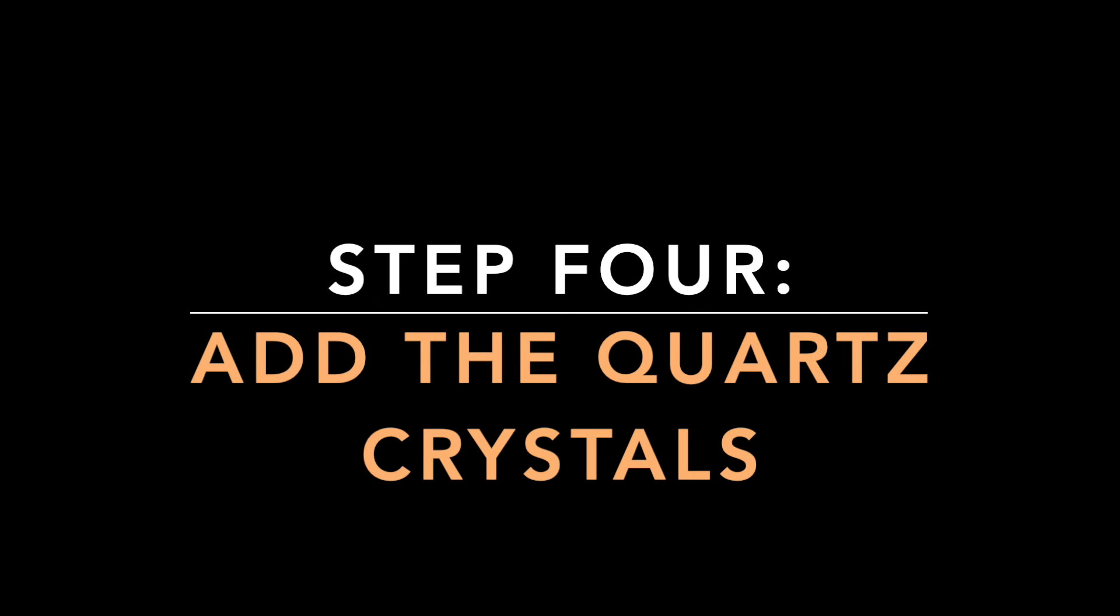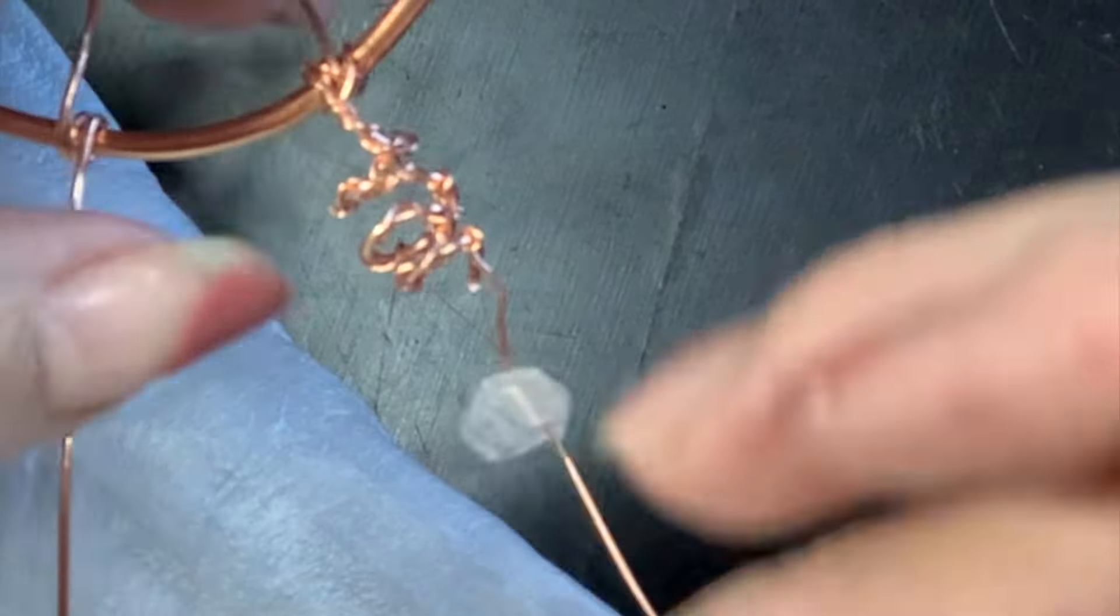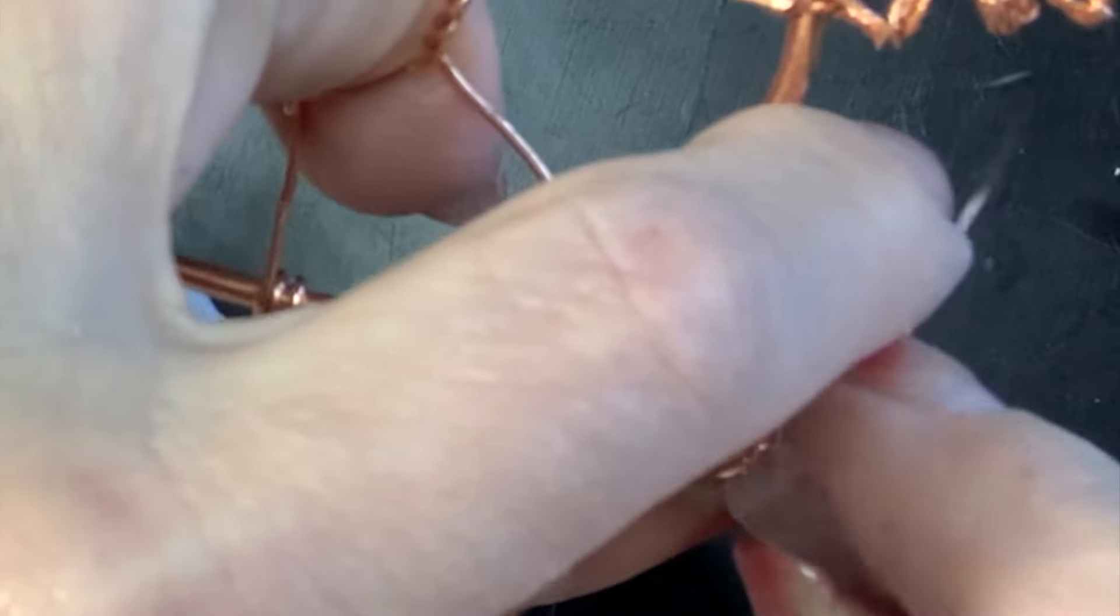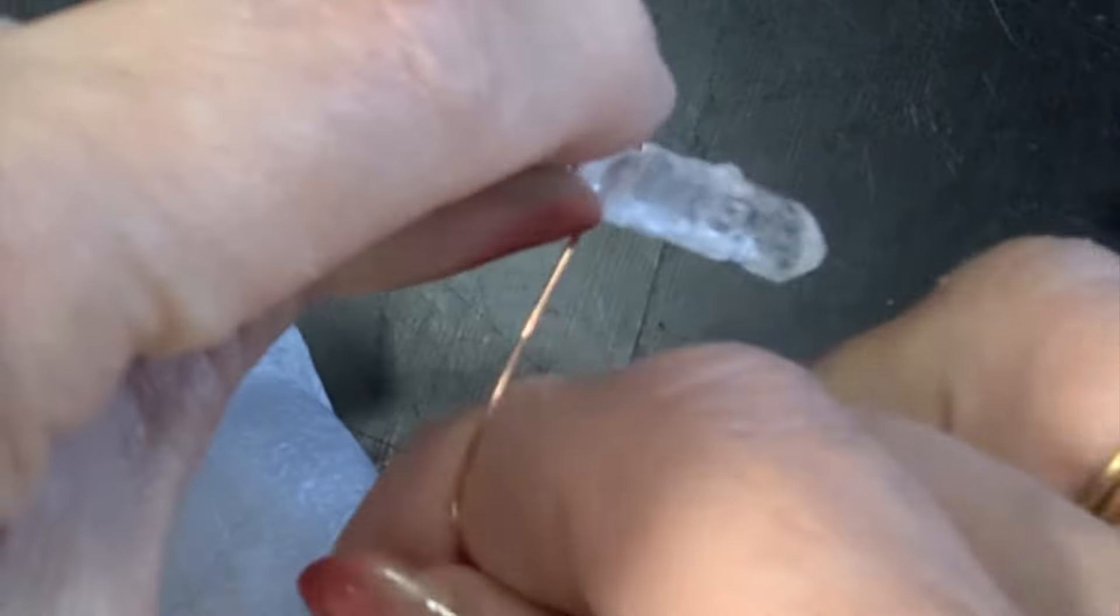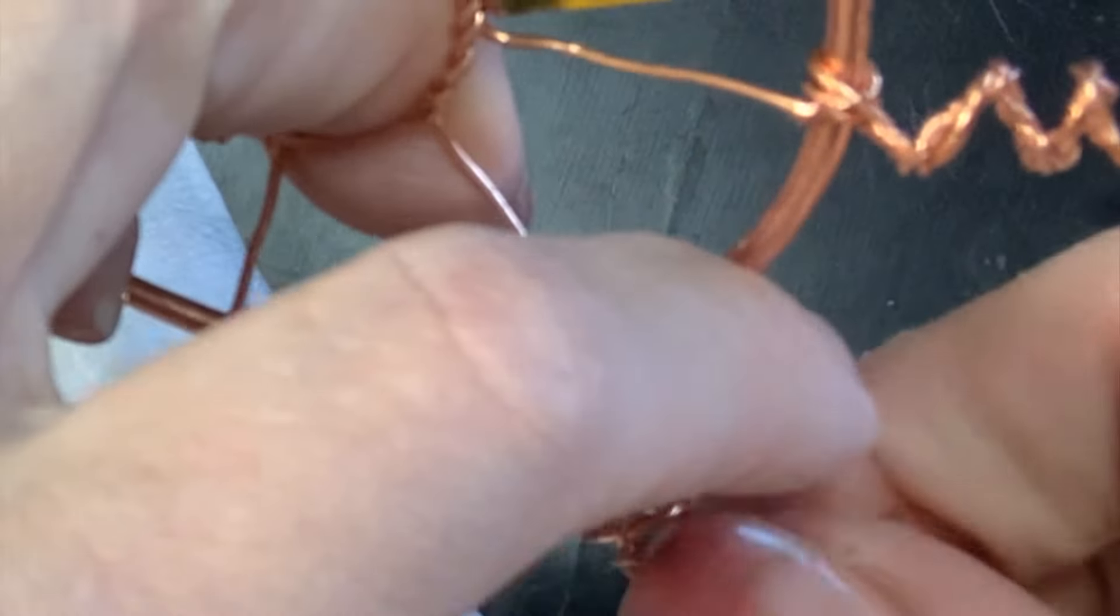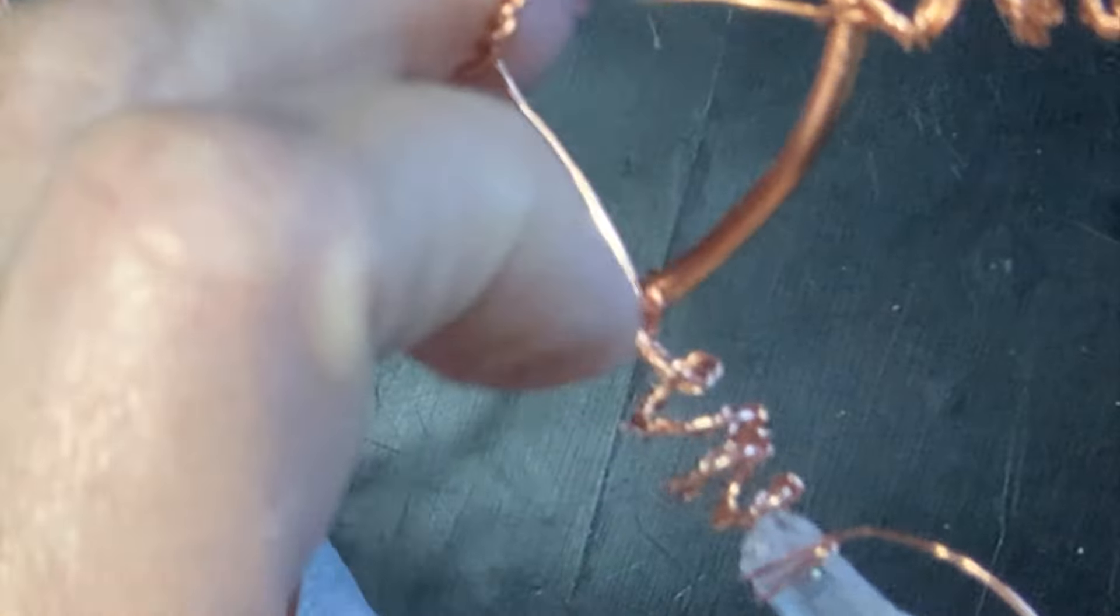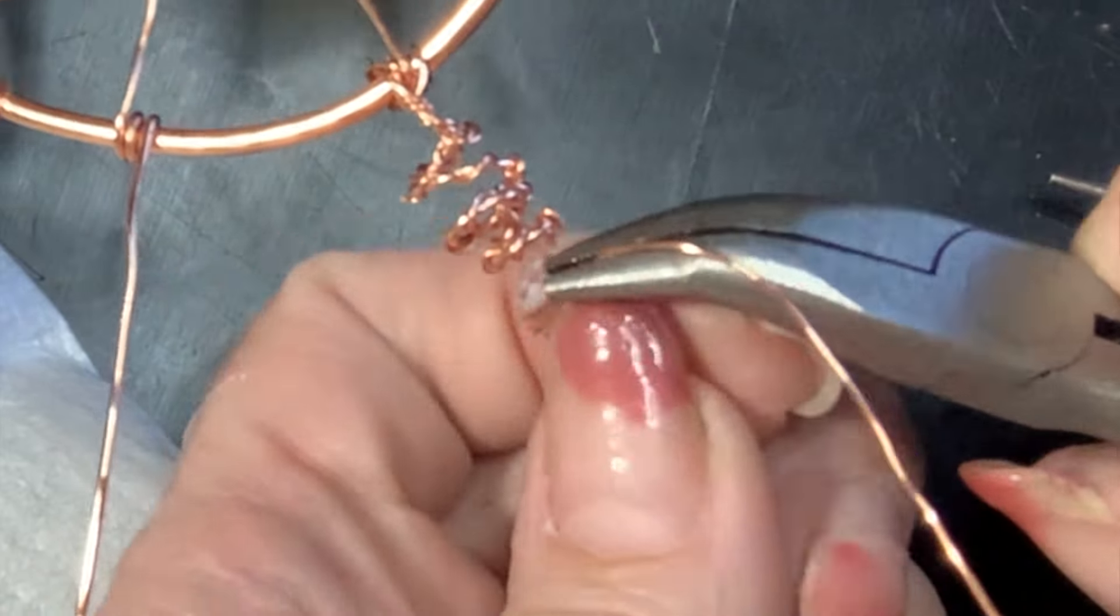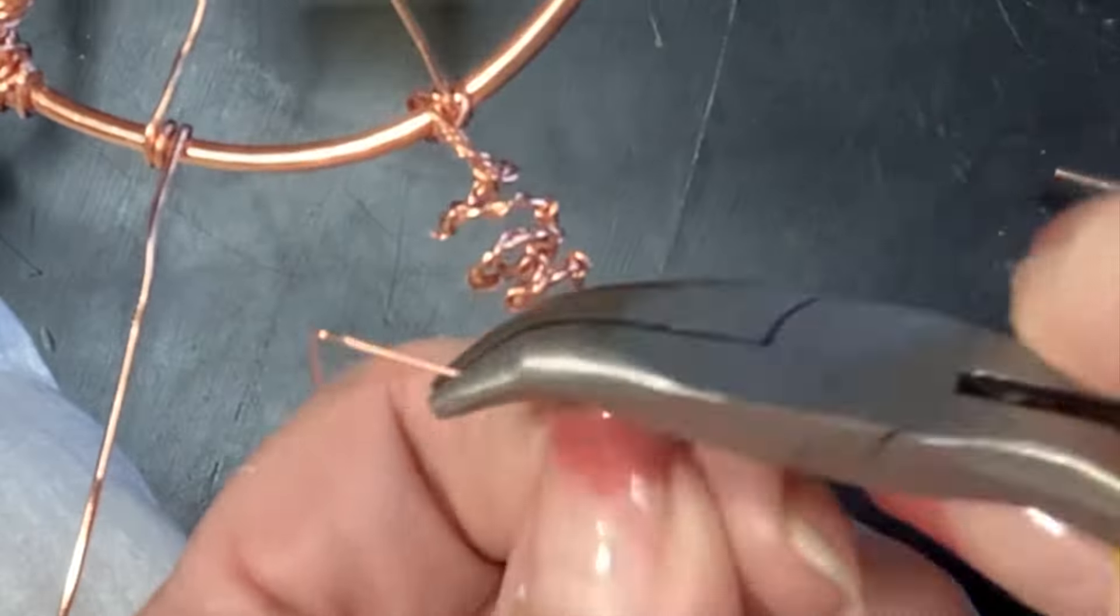I wanted these little coils to just kind of stick out for decoration and interest. When that's done, I'm going to add the quartz crystals to the end of each of these wires. This is why I wanted to get crystals that already had a hole in them, because it's a lot easier and stronger to have that hole so that I'm not just wrapping around, I'm actually going through the crystal itself and wrapping around.